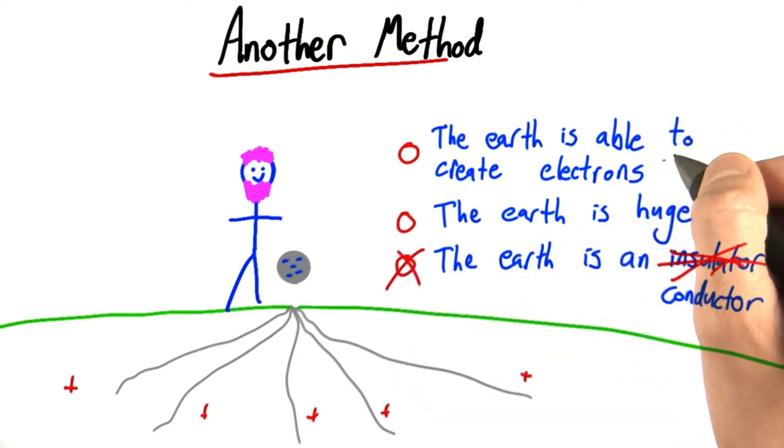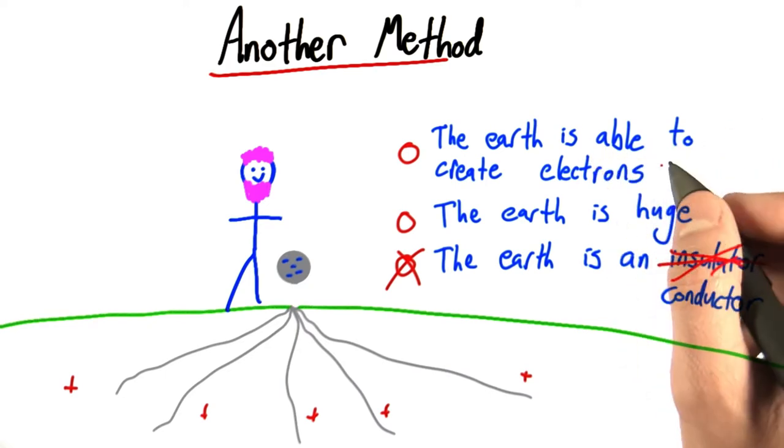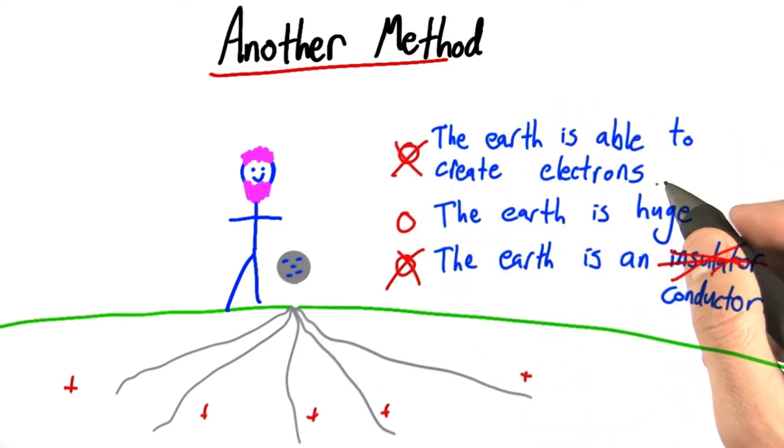Also, the Earth is not able to create electrons. Nothing can create an electron without also somehow creating a corresponding positive charge.